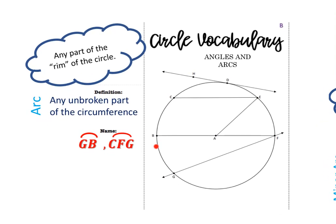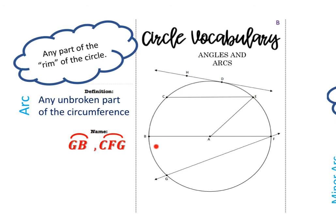The next word is arc. An arc is any unbroken part of the circumference — the circumference is the outside of the circle. So GB, which is right here, is considered an arc. CFG is also considered an arc. Sometimes we name it with two letters, sometimes with three, and we'll talk about the difference in a second. For arcs, we use this notation — there's a little arc over the top.